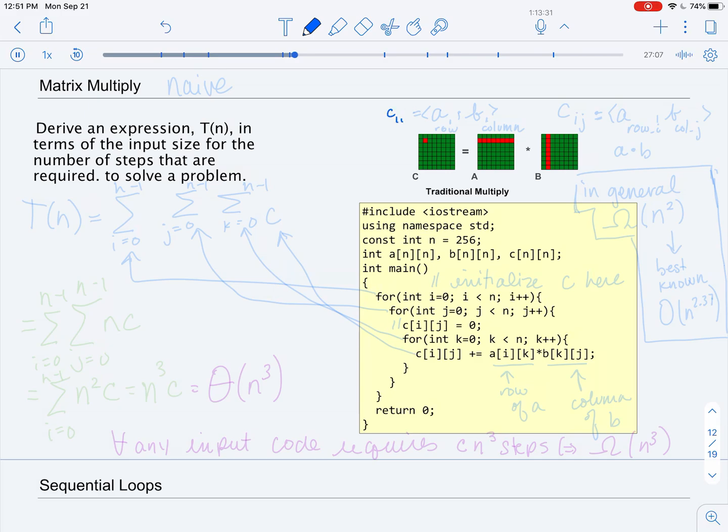I have to do the dot product of the first row vector in A, and I have to multiply that by the first column vector in B. And so this is going to be the row, and this is going to be the column.